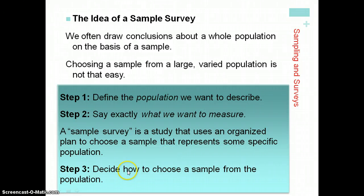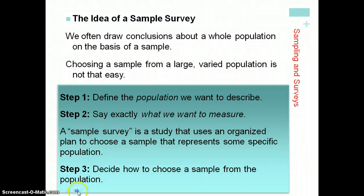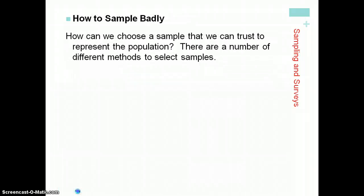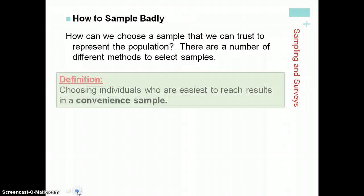We need to decide how to choose a sample from the population. If we're talking about registered voters, it's pretty easy to have a list we can choose from. But sometimes we might not have a list of all individuals in our population. There are some bad ways to select a sample, and one of them is what's called a convenience sample.